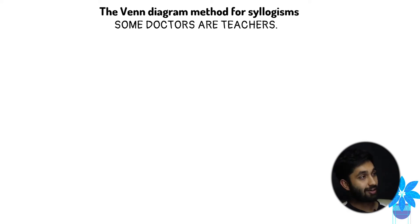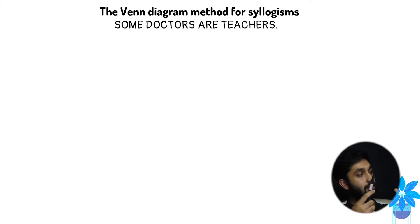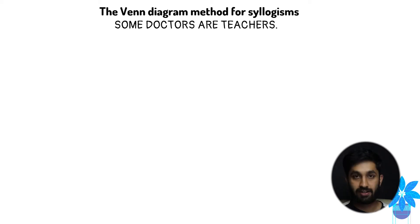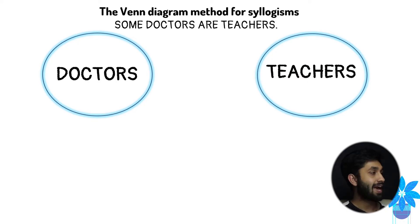Let's take a look at the Venn diagram technique for tackling syllogisms. Looking at this example: some doctors are teachers. This is a very typical syllogism you will get in your exam. The first step in using this Venn diagram technique is identifying the two objects — here it's doctors and teachers — and then circling those two objects. So write down doctors and circle them.